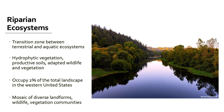So what are riparian ecosystems? Riparian ecosystems are transitional zones between terrestrial and aquatic ecosystems. As transitional zones, riparian ecosystems typically consist of hydrophytic vegetation or water-loving plants, productive soils, and wildlife and vegetation communities that are adapted to flooding and droughts. Currently, riparian ecosystems occupy about 2% of the total landscape in the western U.S. Despite their small size, these ecosystems encompass a mosaic of diverse landforms, wildlife, and vegetation communities.